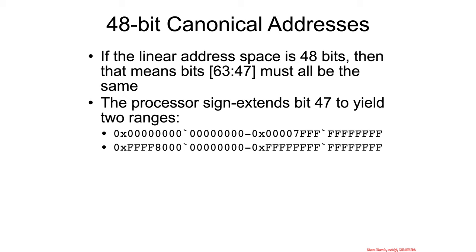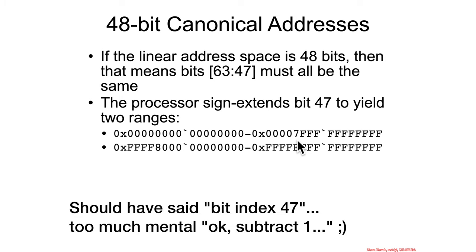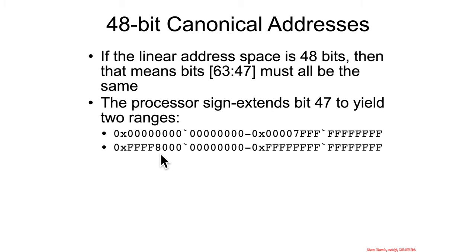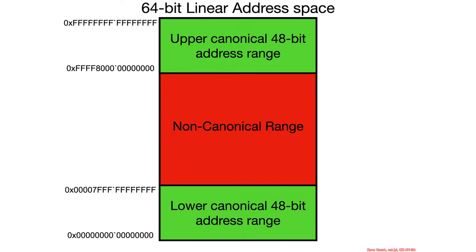In terms of the 48-bit linear address space, which is used for 4-level paging, that means addresses from 0 all the way up to 0x00007FFF... are all part of the lower range. This is the range in which bit index 46 is set to 0, and then all the remaining upper bits also have to be set to 0.